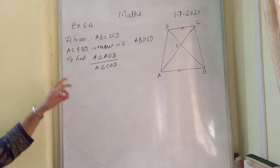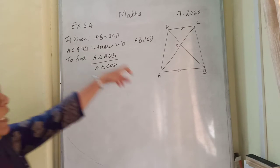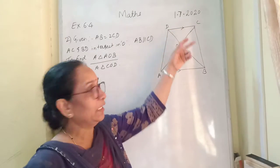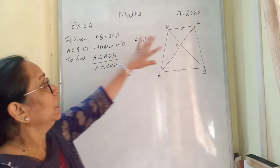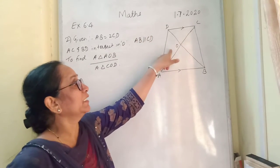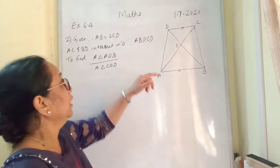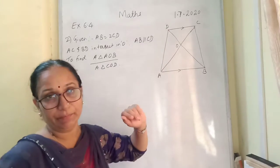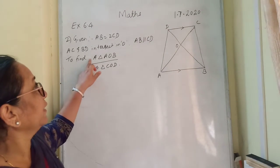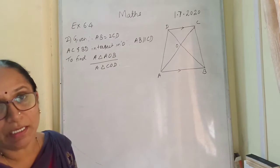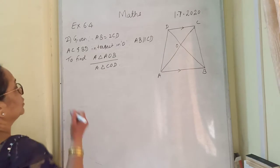Now children, question number 2 says ABCD is a trapezium. That means AB is parallel with CD, it is given to us. BD and AC intersect in point O. AB is equal to 2 CD. AB is greater side. We have to find area triangle AOB upon area triangle COD. Now, solution you write down.